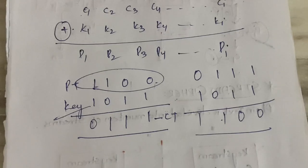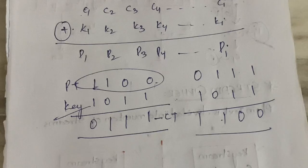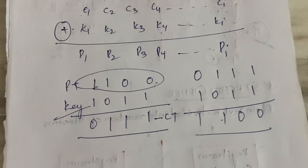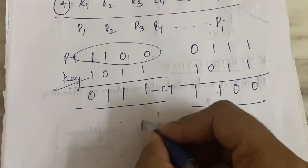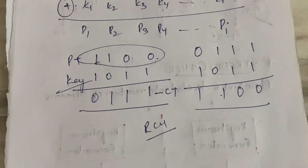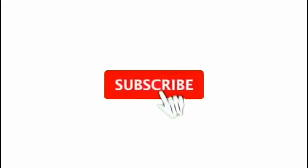XOR is very simple: if both bits are different you get 1, if both are the same you get 0. That's all about stream cipher. In the next video I'll explain the stream cipher algorithms — mostly the RC4 algorithm — and then key distribution and so on. Thanks for watching till the end.